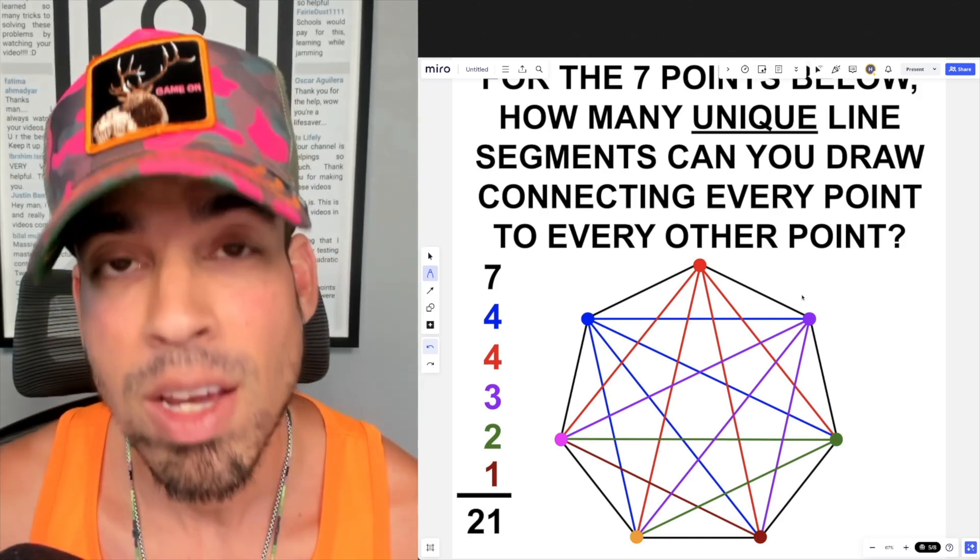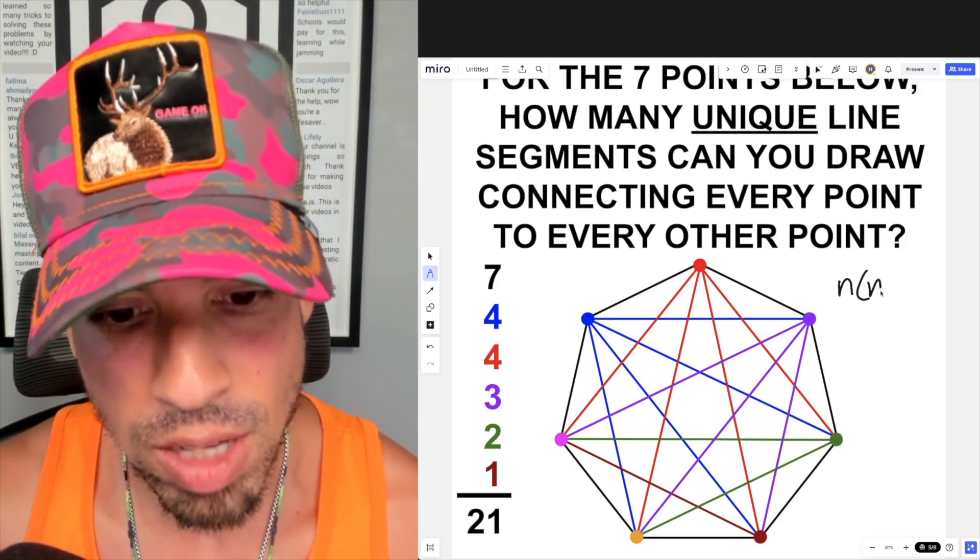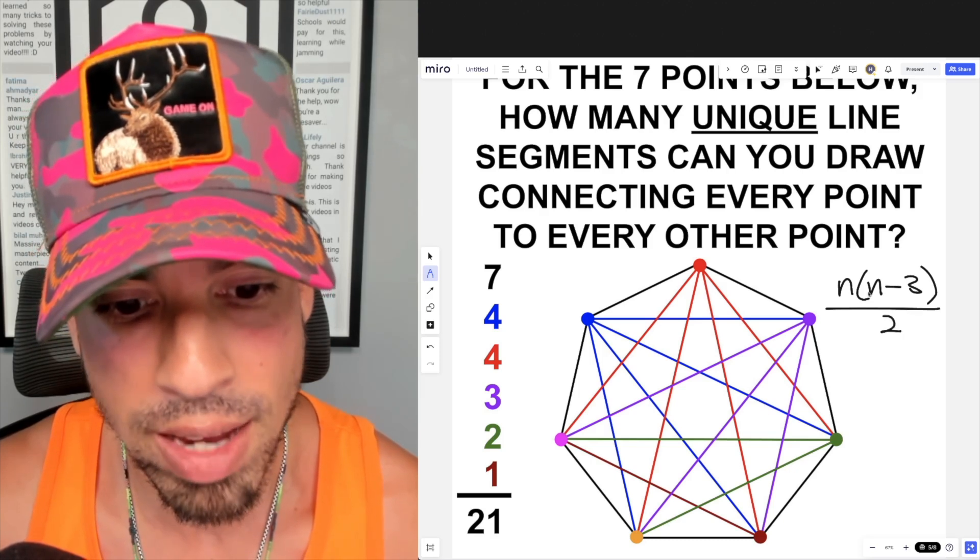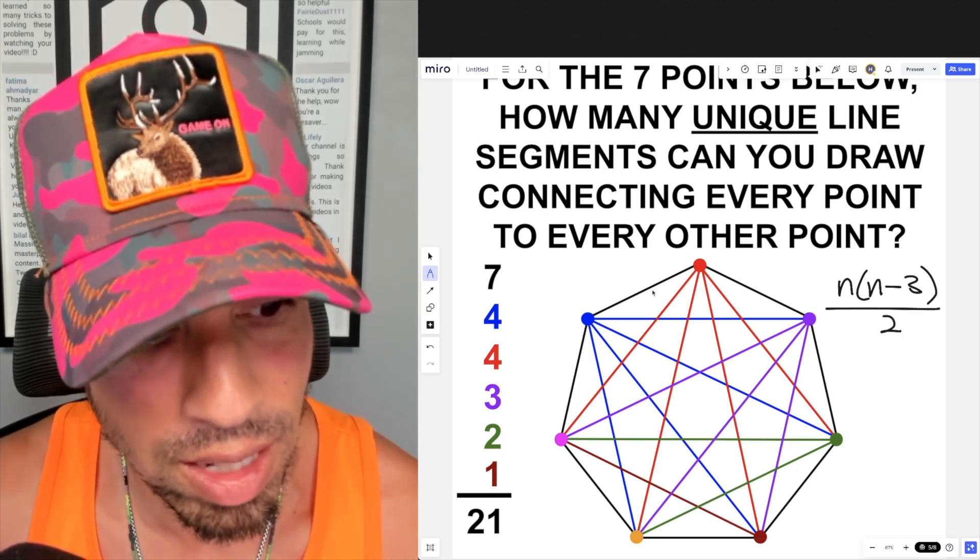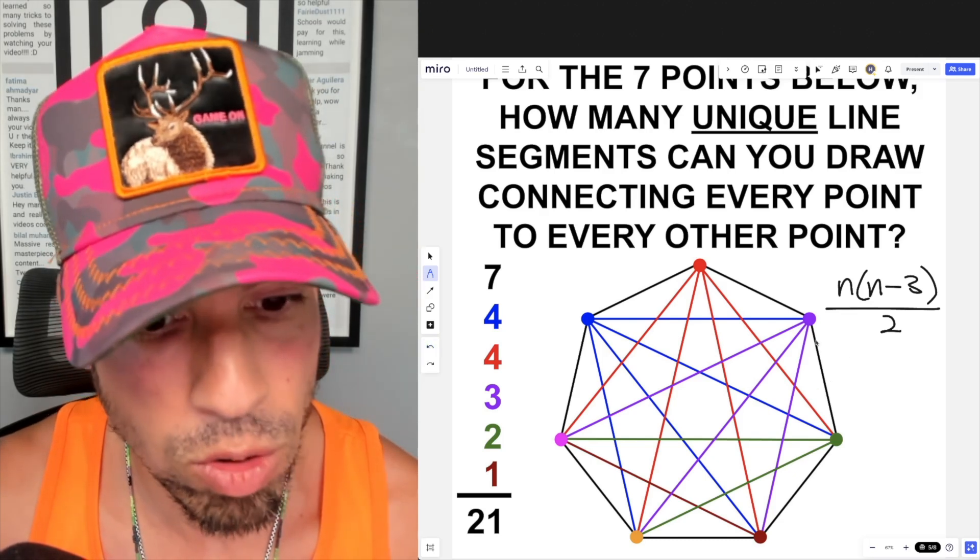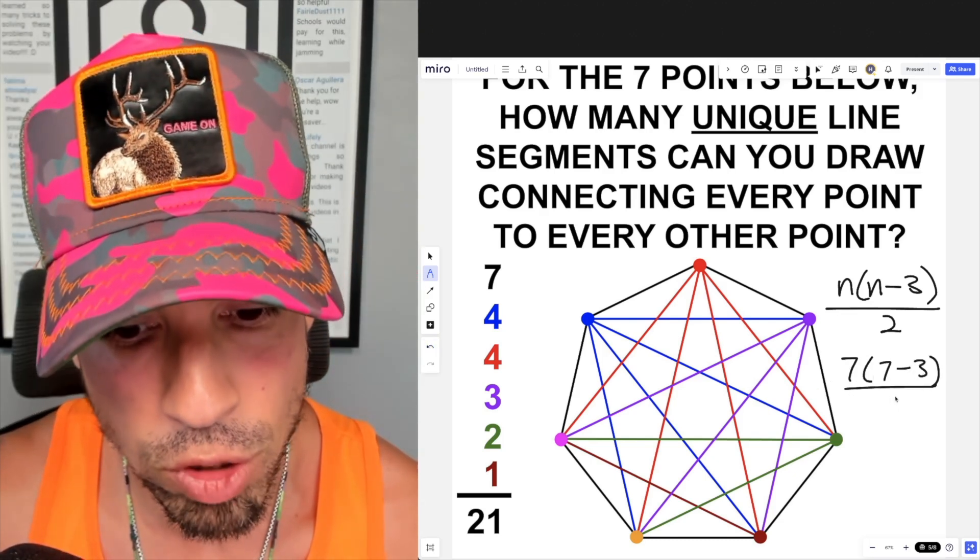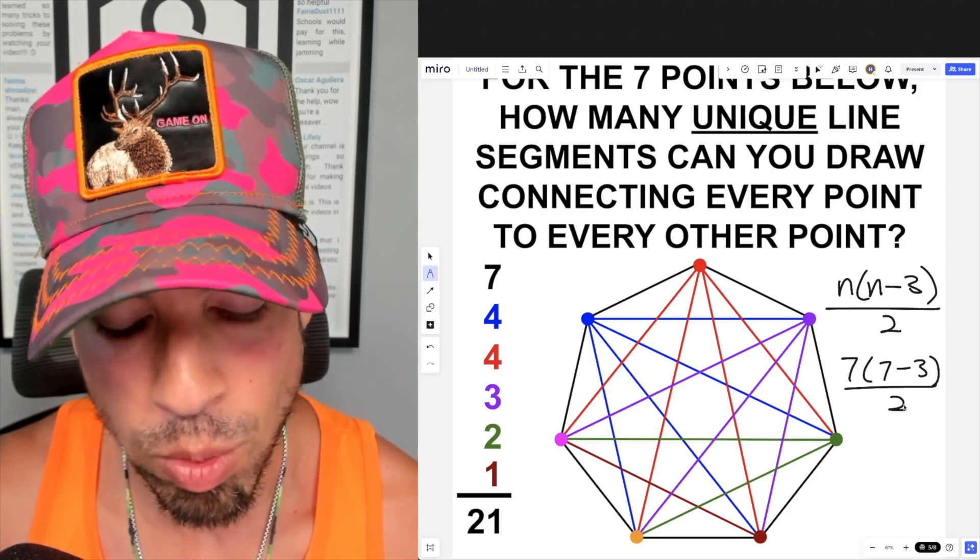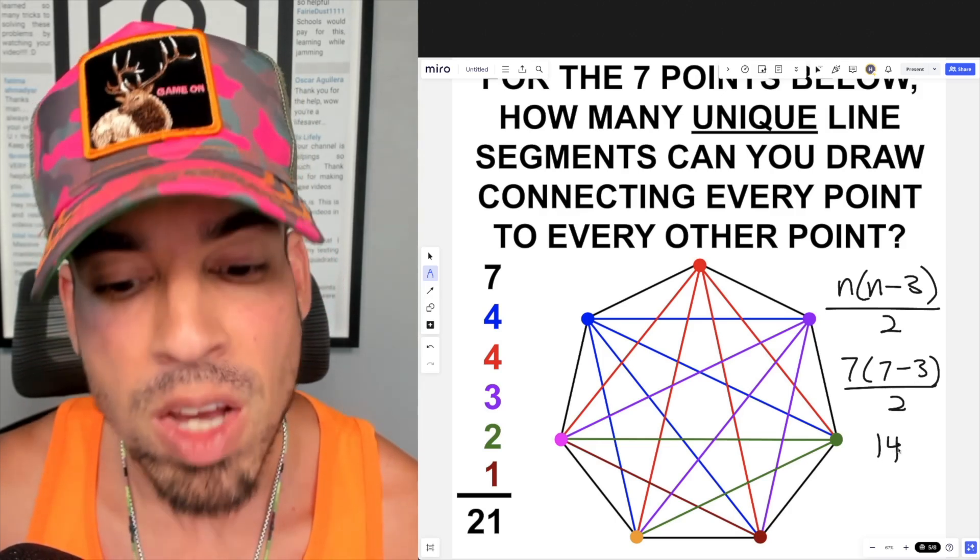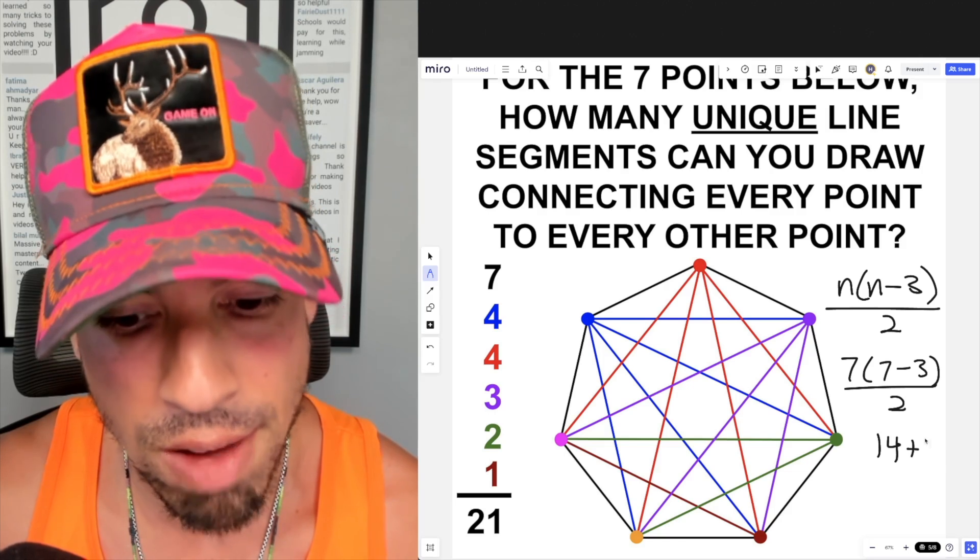And the number of diagonals for any polygon is n times n minus three divided by two, where n is the number of sides, and the side lengths are these external black segments, and there's seven of those. So we plug in seven times seven minus three over two. That's seven times four which is 28 divided by two which is 14. So the number of diagonals are 14, the number of outside sides are seven. Add those together and that's another shortcut to get you to 21.